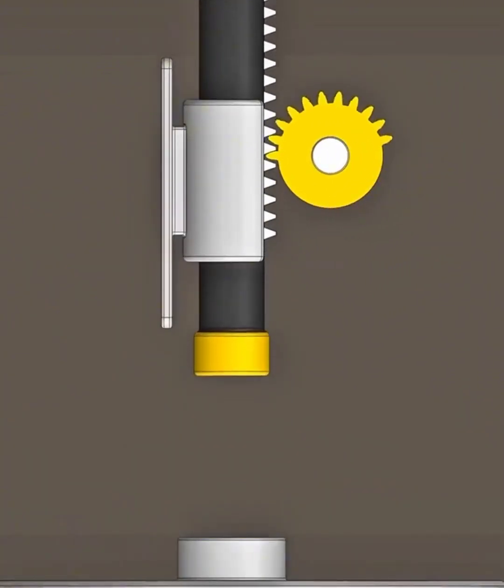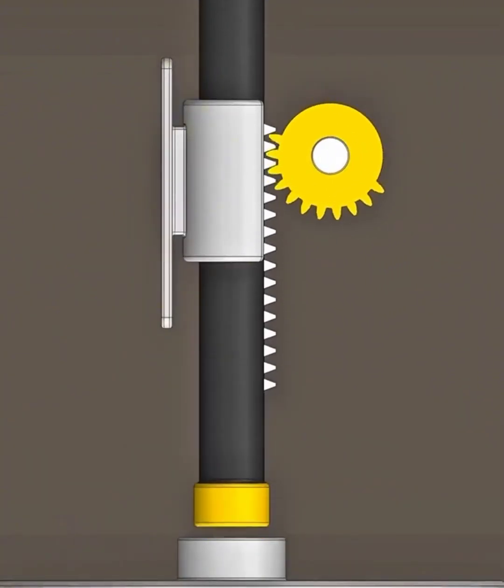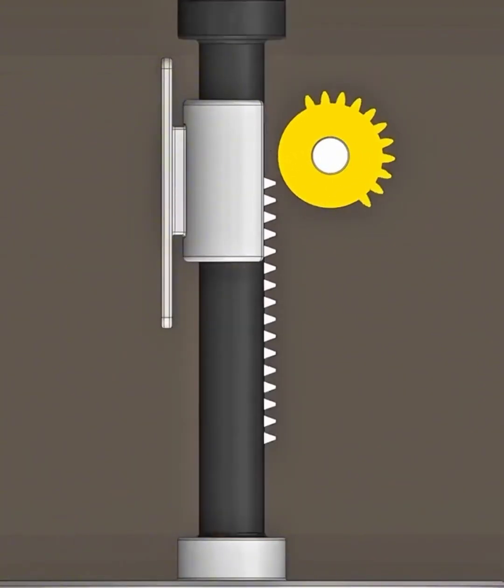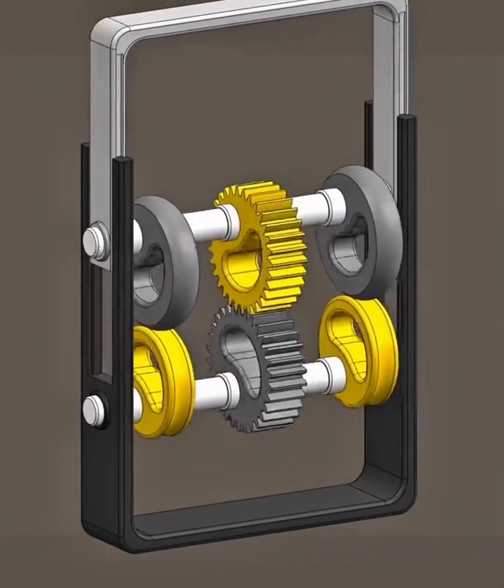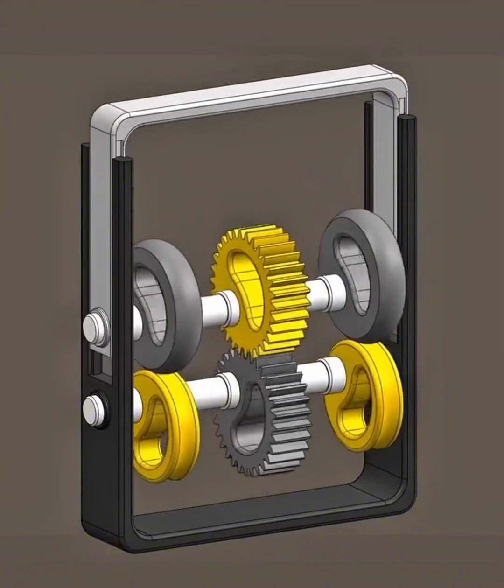This is the principle of the Geneva intermittent motion. What is the principle of this mechanism?